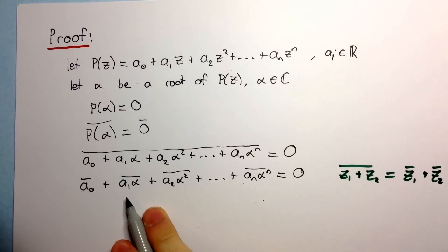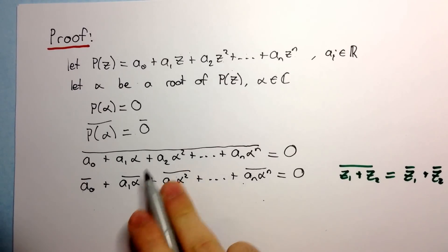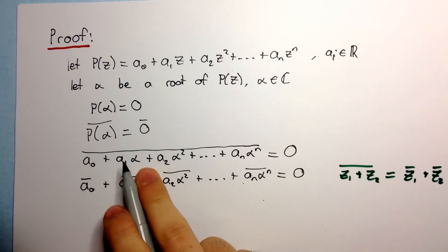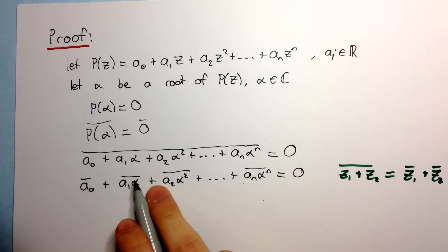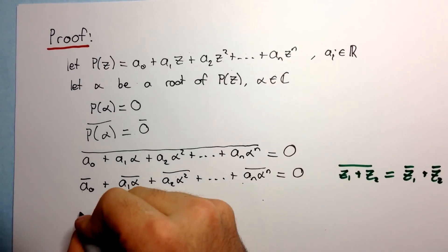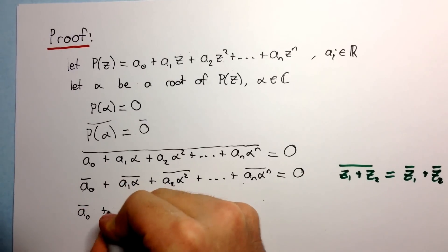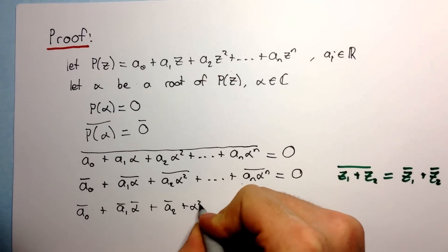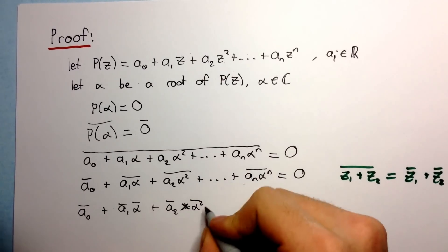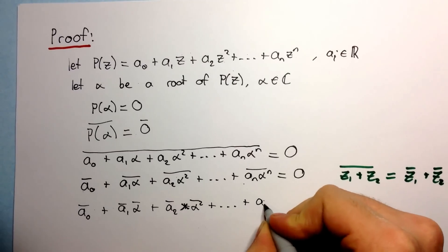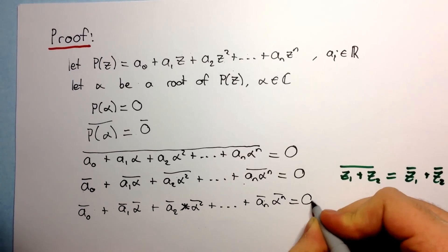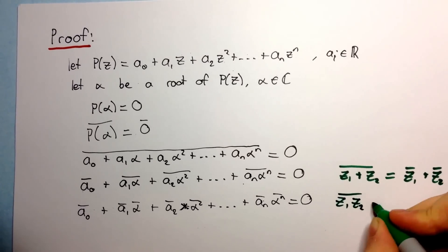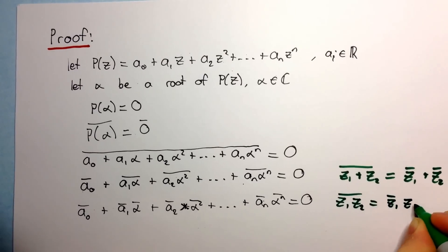Continuing, now we use another property of conjugates. We know that the conjugate of a sum is equal to the sum of the conjugates. Now we use the conjugate of a product is equal to the product of the conjugates. So we get A₀ bar times one, plus A₁ bar times alpha bar, plus A₂ bar times alpha squared bar, plus up to AN bar times alpha to the N bar is equal to zero. That rule is: the conjugate of Z₁ times Z₂ equals Z₁ bar times Z₂ bar.